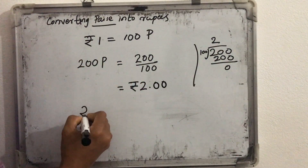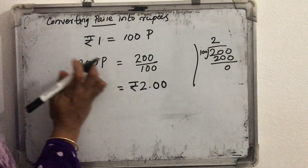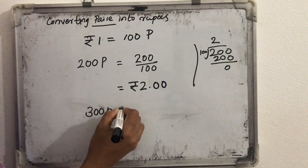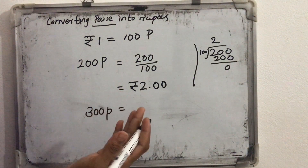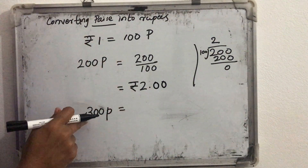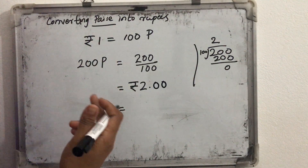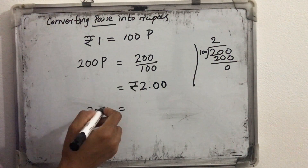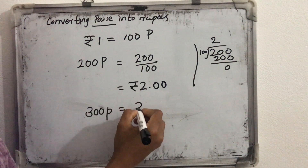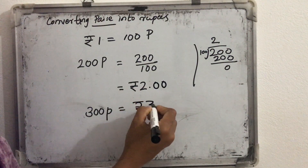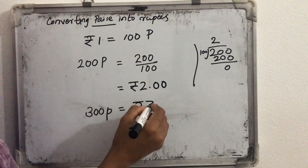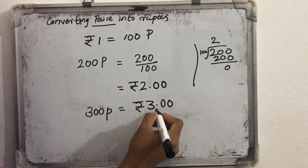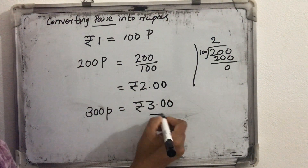Just like that, what will be 300 paise? When we convert 300 paise into rupees, in the same way we are dividing 300 by 100 and we will get the quotient as 3 and the remainder as 0. So it will be 3 rupees. When we write this, after 3 we can put a decimal point, then 2 decimal places we can write.